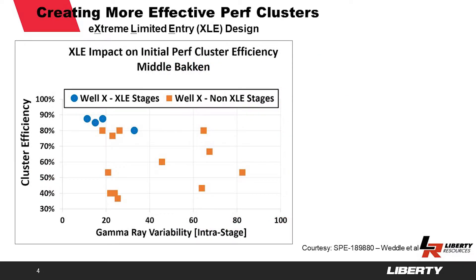An example of that is provided here in the work by Weddle, Griffin and Pearson, published in SPE over the last couple of years — one of the paper numbers is listed at the bottom right of this graph. Weddle et al. did work to verify with radioactive tracers how many perf clusters were effectively fractured in a stage. Their strategy was to use typically fewer perforations with more clusters to create a better distributed network along the lateral for each individual stage.